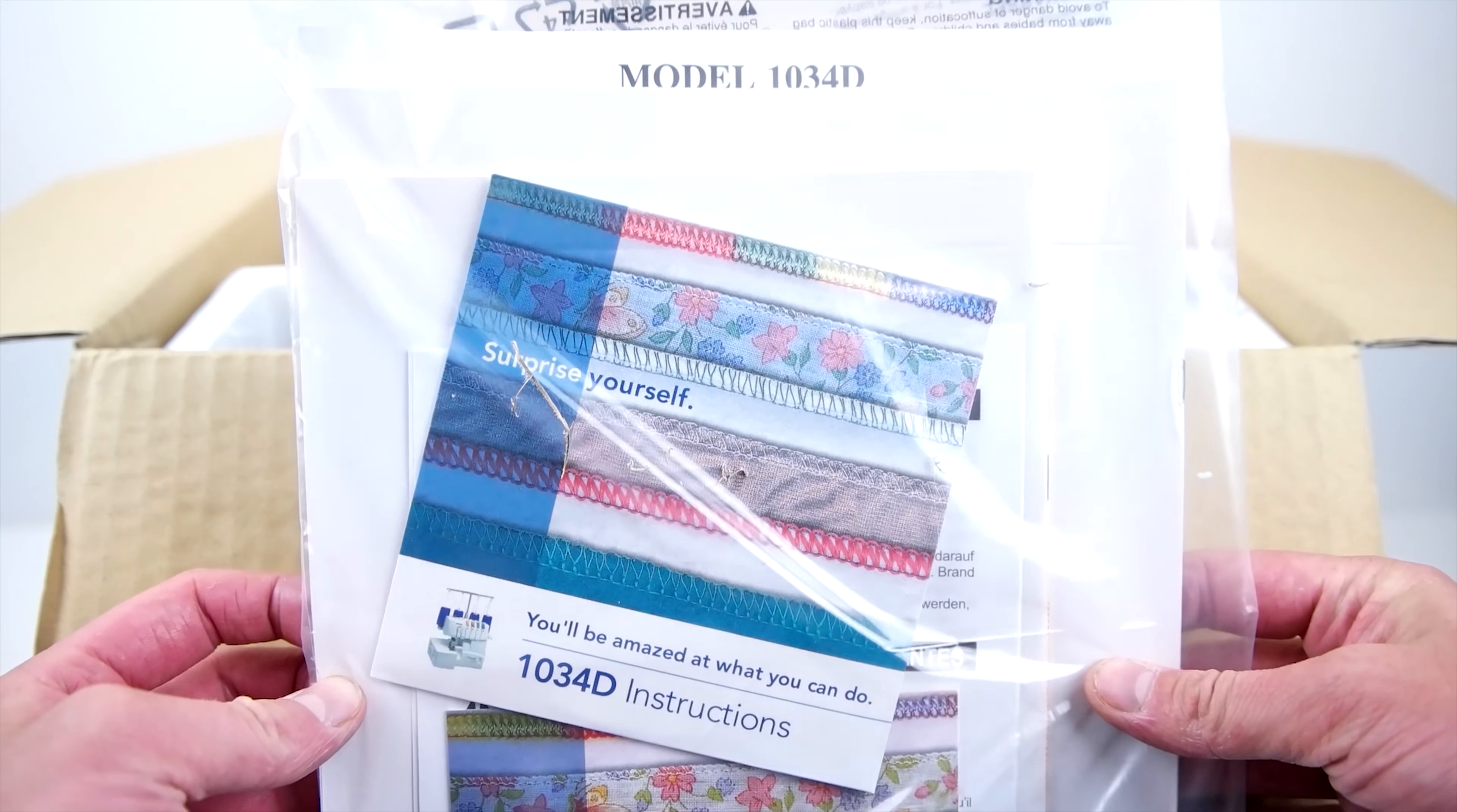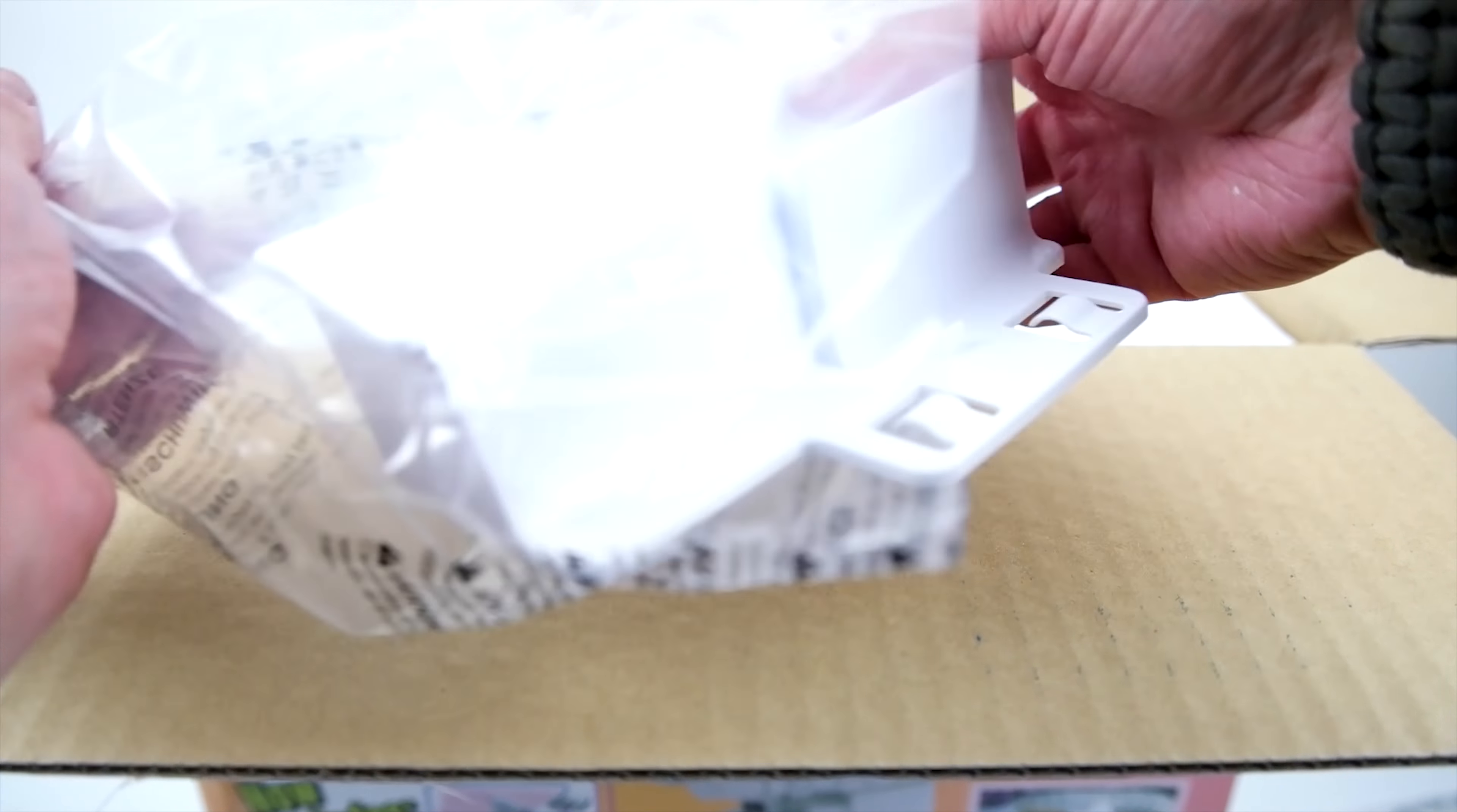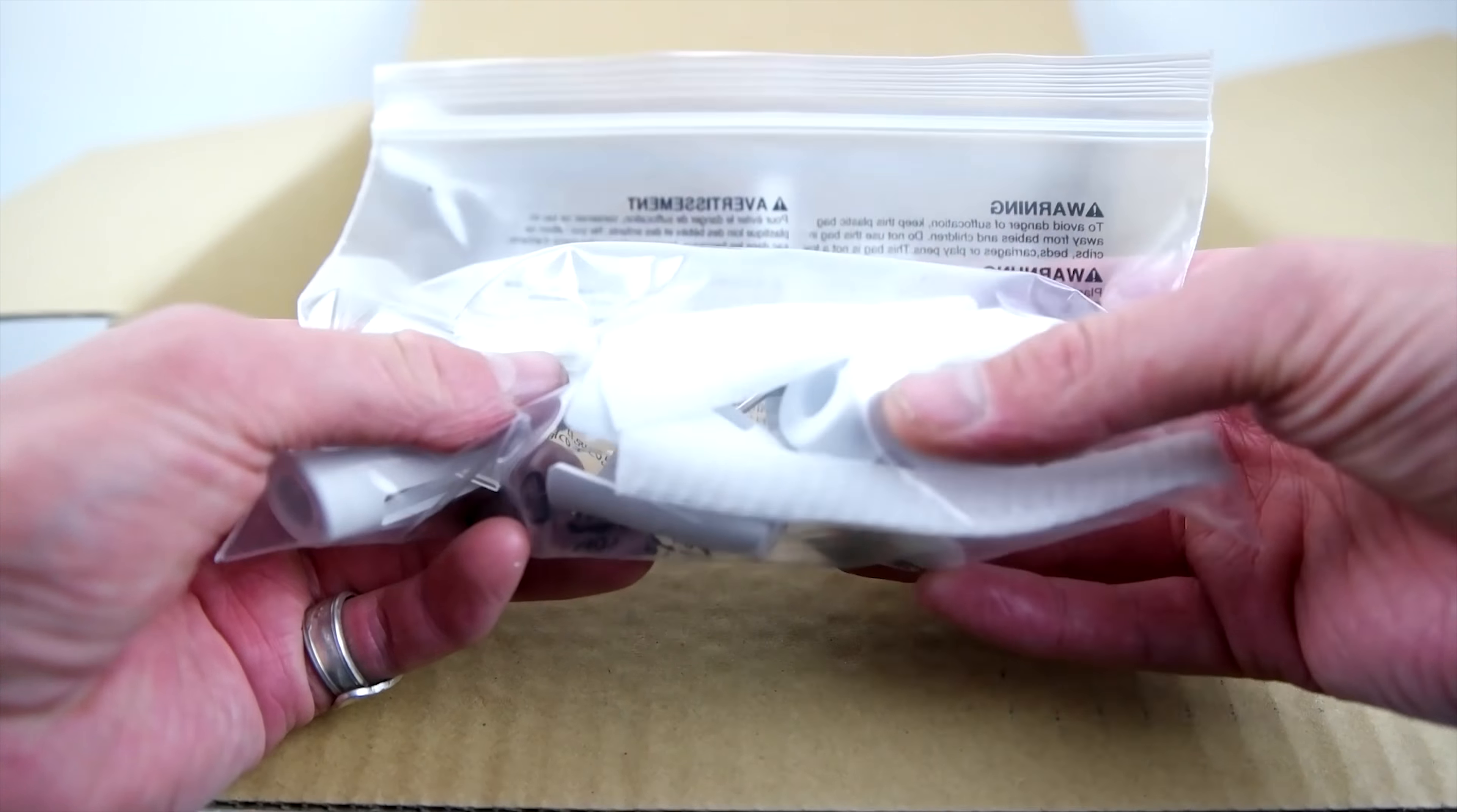First look in the box: we have instructions and two DVDs on serger techniques, the power supply and pedal, and a detachable trim trap. It's kind of small, but honestly I never use these anyway. Under the styrofoam case we have the main unit, and we also have an accessory bag which we'll get into later.